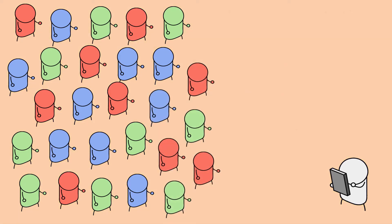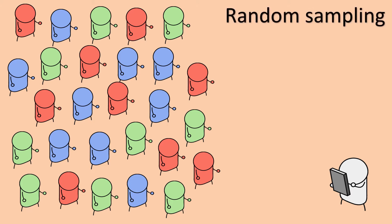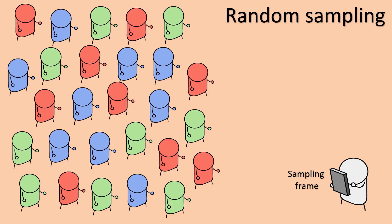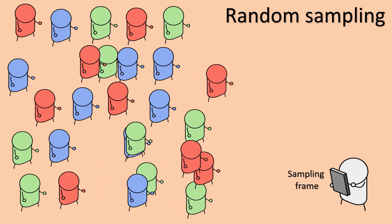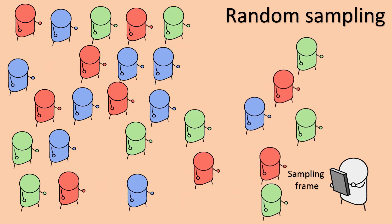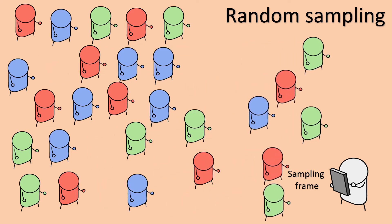The first sampling technique is a random sample. In this case, the researcher will use the sampling frame and select a group of people at random. This random sample effectively involves taking people from anywhere on the list — it's similar to putting names in a hat.